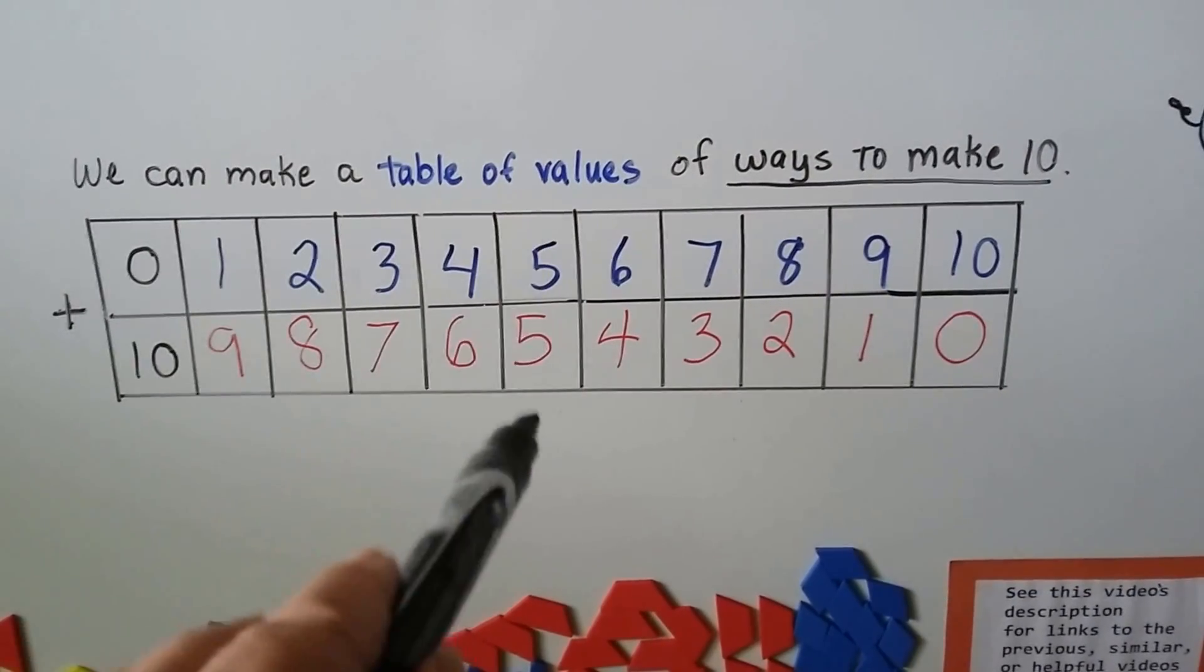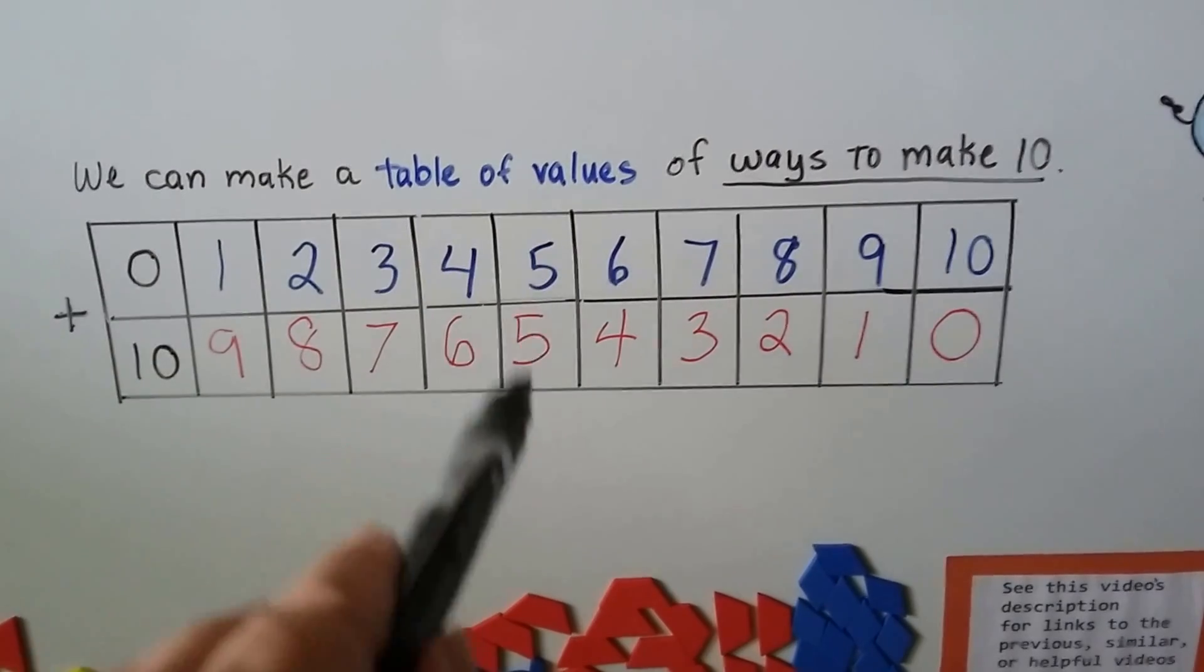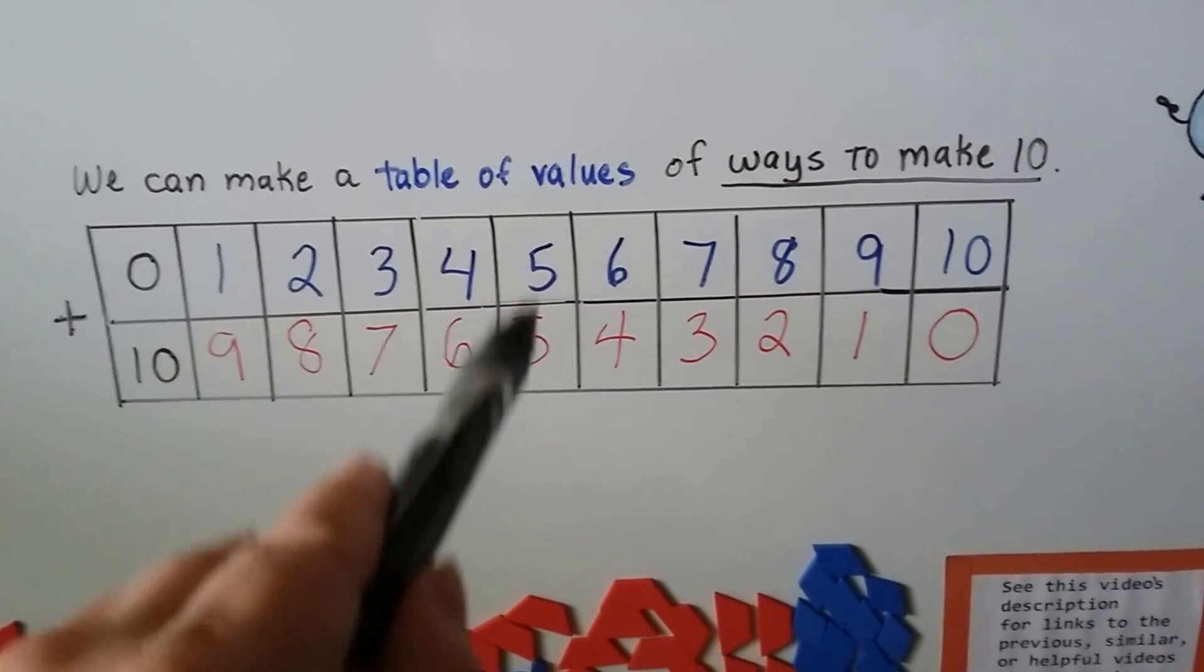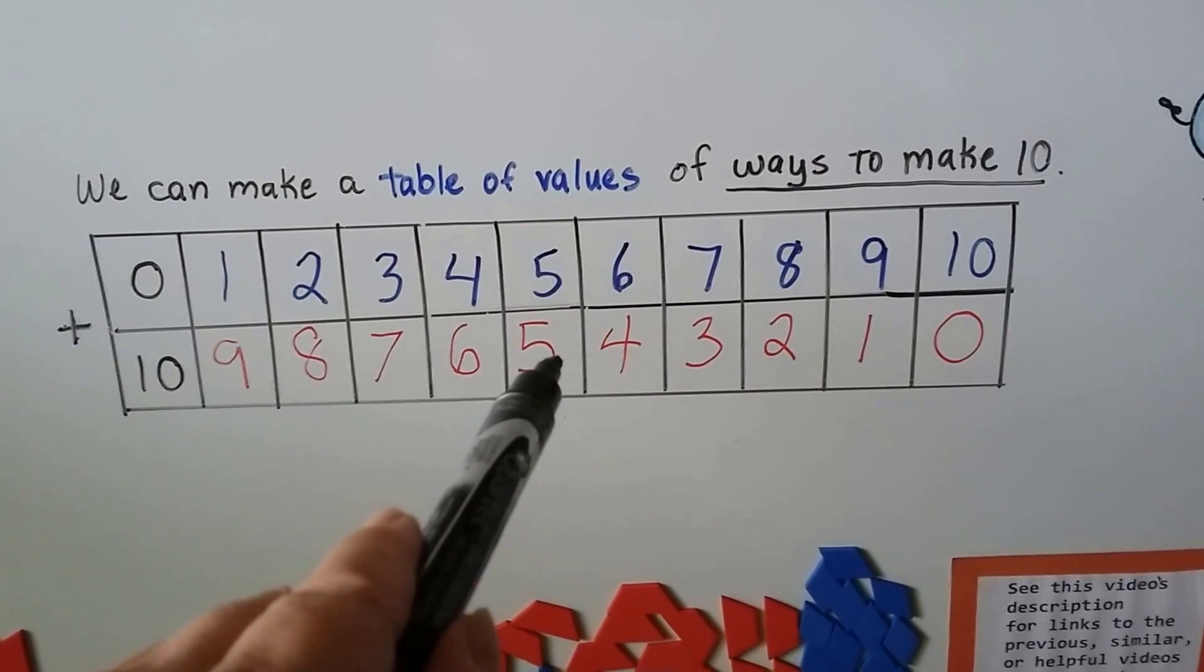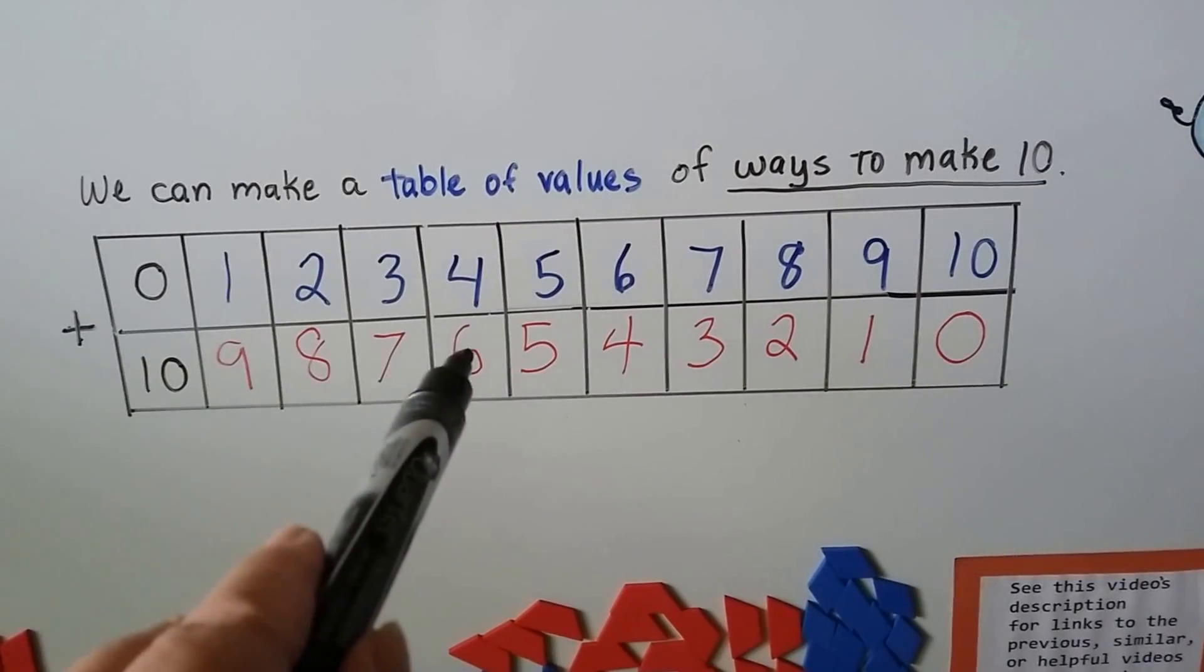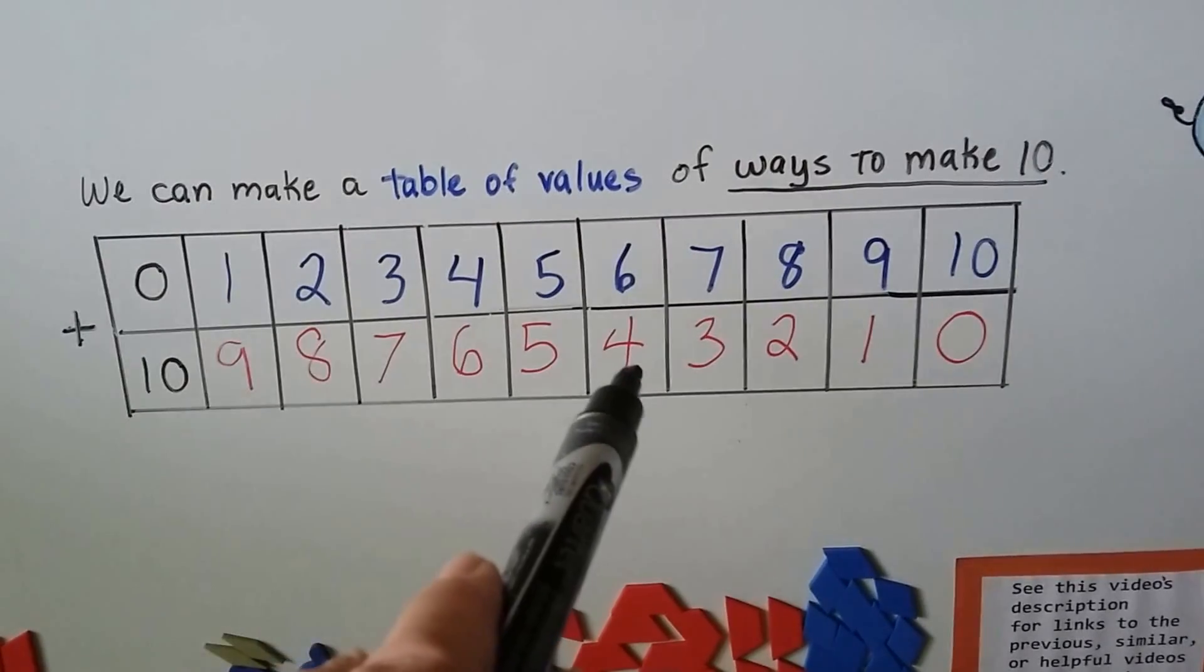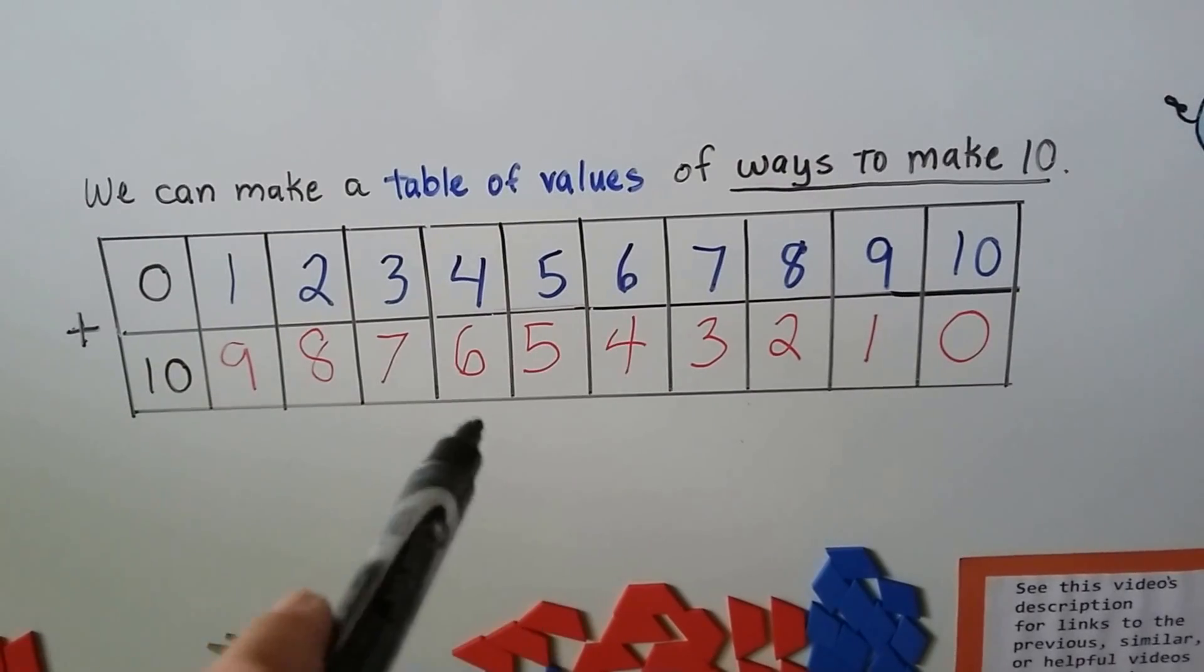Do you see what happens right here with the 5 plus 5? Those are doubles. The 5 plus 5 is the middle, and on this side is 4 plus 6, and on this side is 6 plus 4. It's just flipped around.